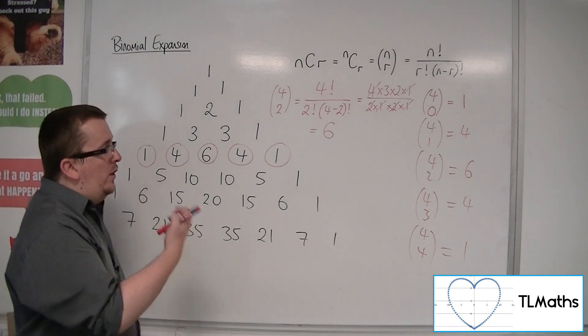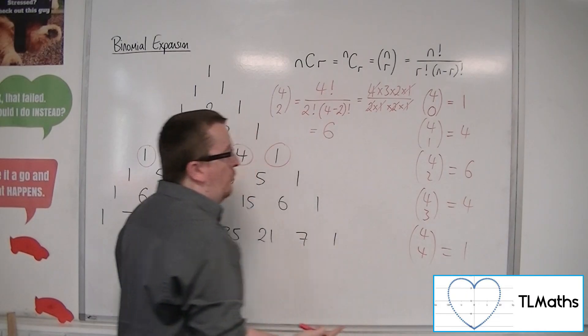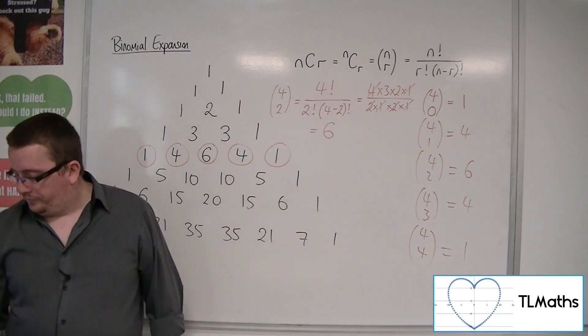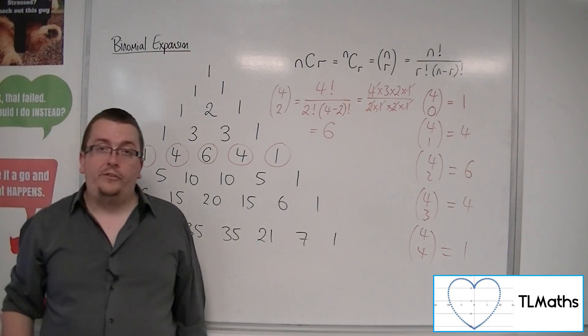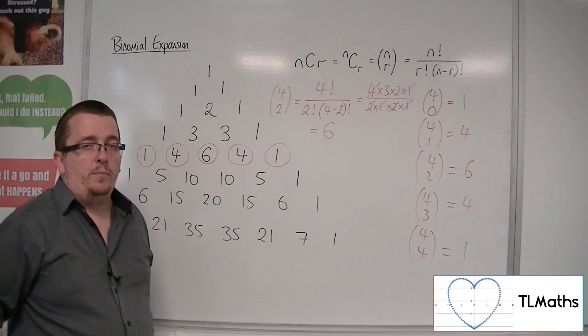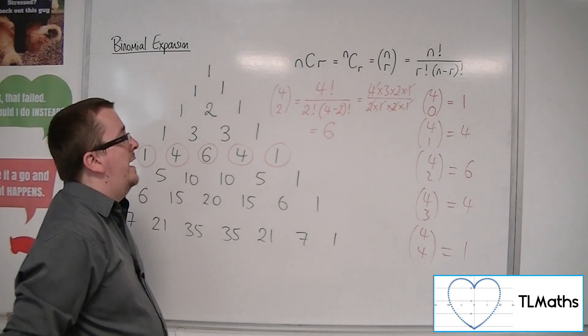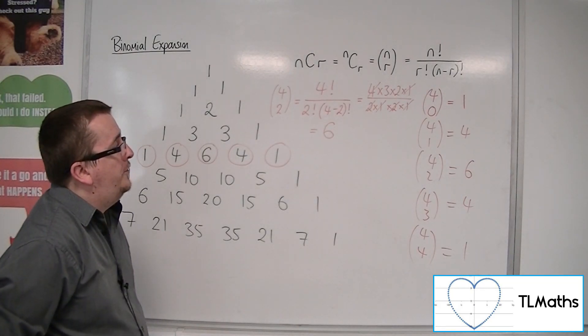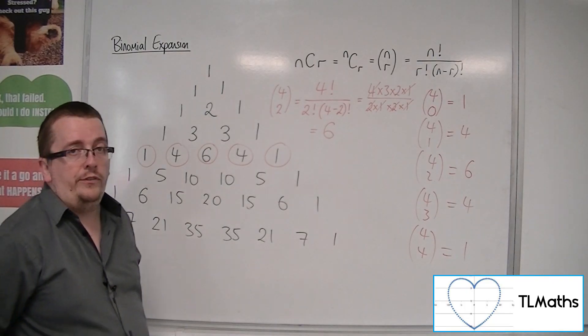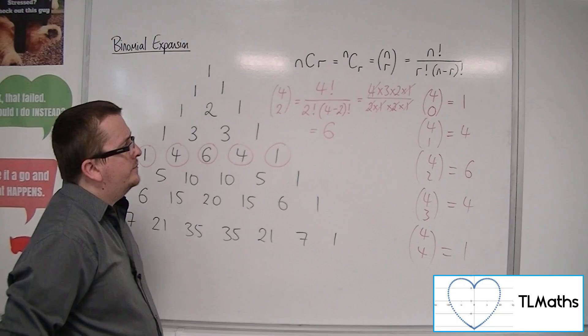That's how Pascal's triangle and the NCR formula link together. It may still seem like I've plucked this combinations formula out of thin air. This is to do with combinations, when the order of choice doesn't matter.